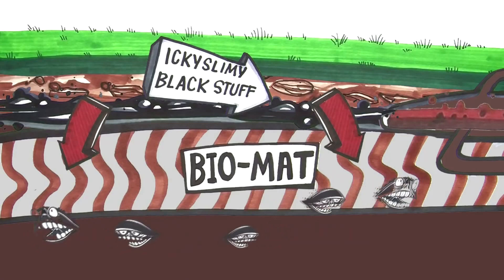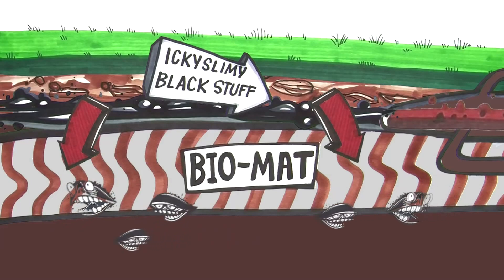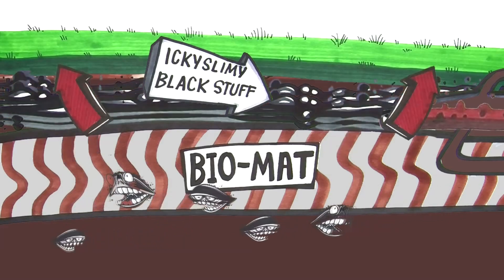Wastewater can still flow through this biomat initially, but over time, the accumulation of this substance becomes too much, leading to a clog and, inevitably, system failure.